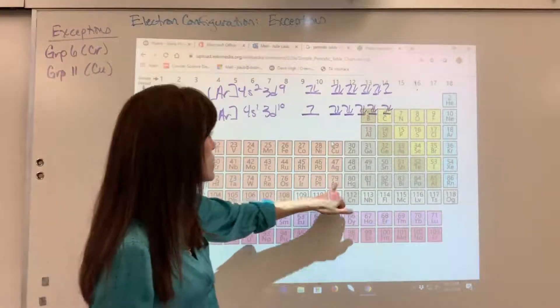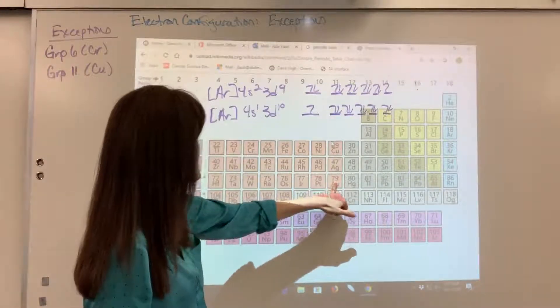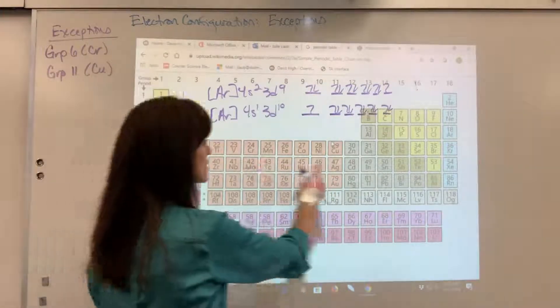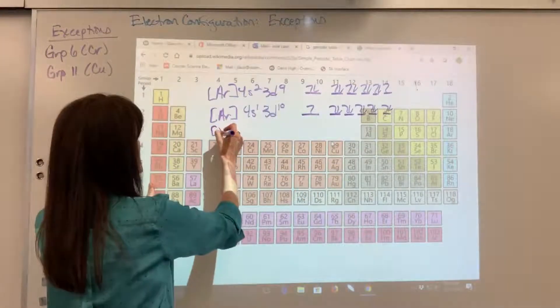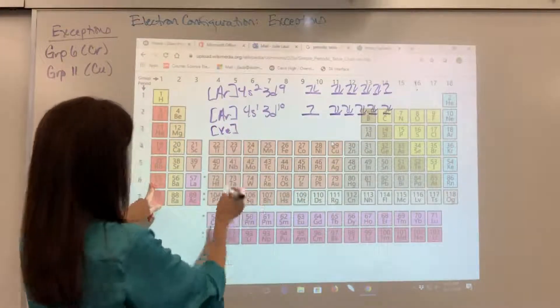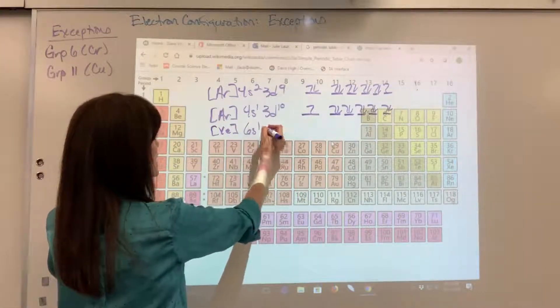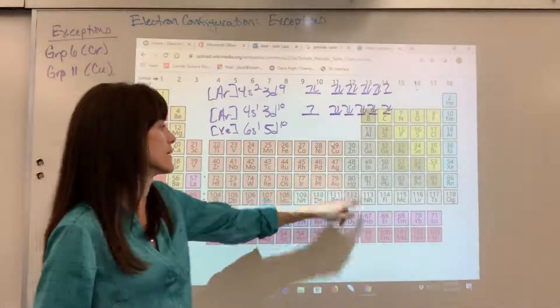So the gold, if I use that as an example, that would change too. So go back to the last noble gas, xenon, and you would have your 6S1, 5D10 right there.